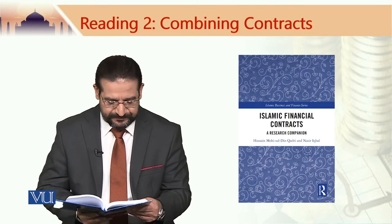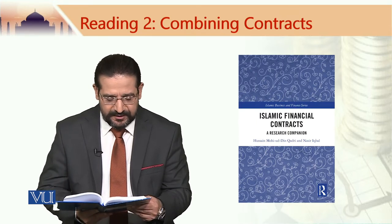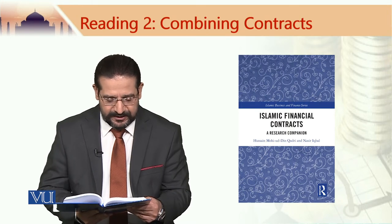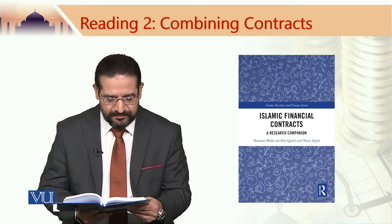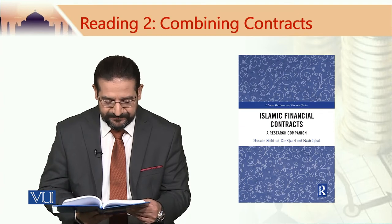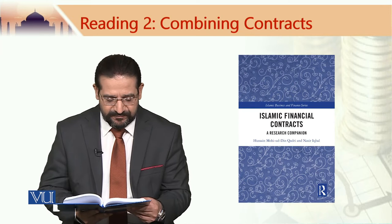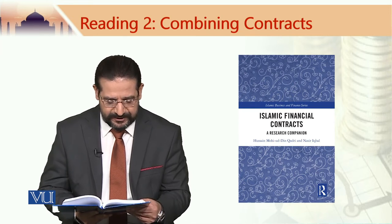Number 5 is the contingent sale. It occurs when a contract is made contingent upon another contract when both are mutually inconsistent. For example, A says to B: 'I sell you my house if C sells his house to me.' Here, the completion of the first contract is contingent upon the second contract.